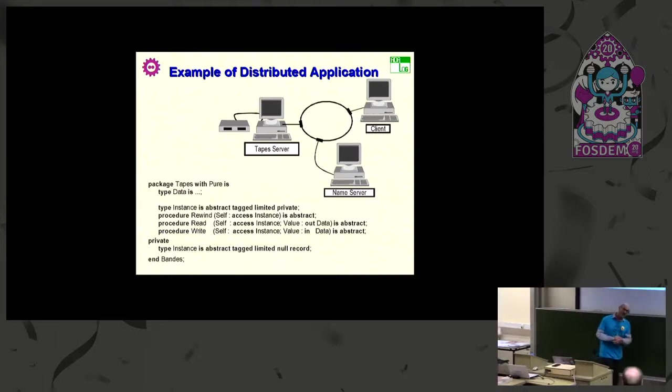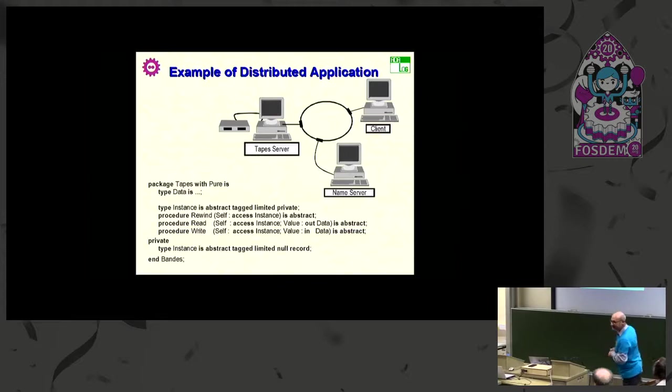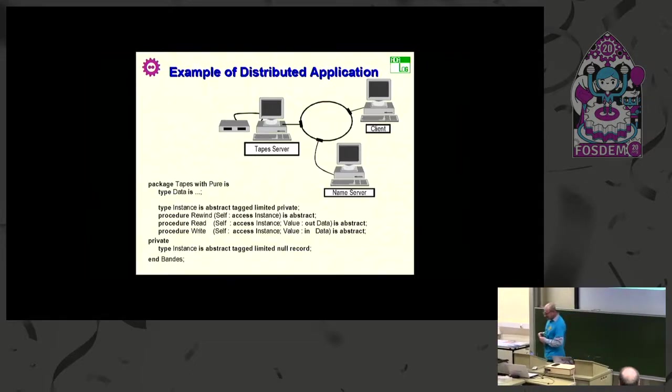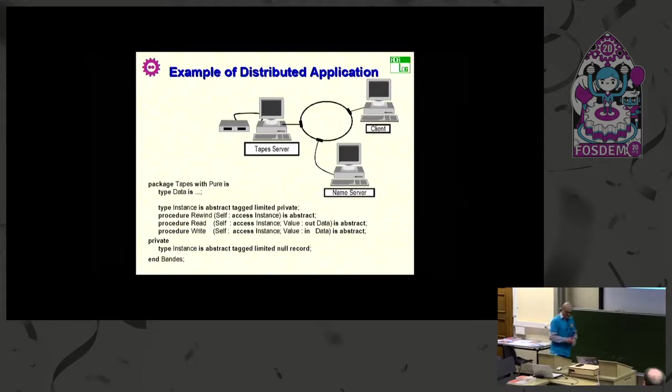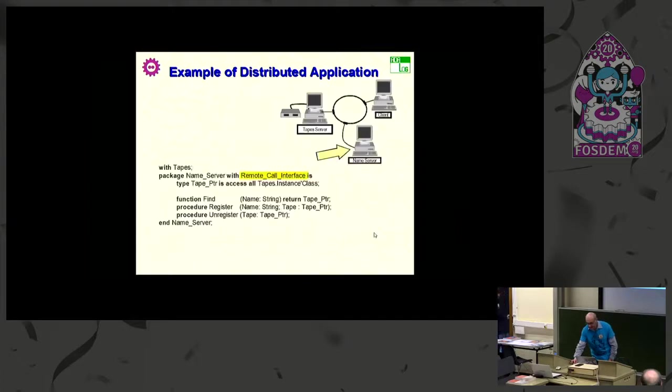Imagine you have tapes. Well nowadays of course you don't use tapes anymore, but could be any server. Well for archiving, when you see the amount of data you can put on microSD card, it's really impressive. Anyway, imagine I have one computer here that manages tapes. So first I define an abstract data type tape with pure, it's another categorization package that means that there is no side effect, and the basic operations rewind, read and write.